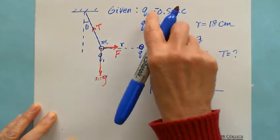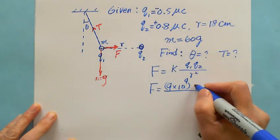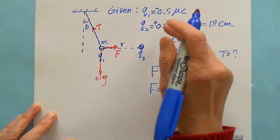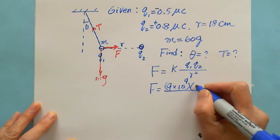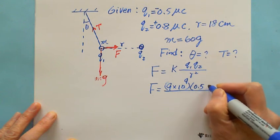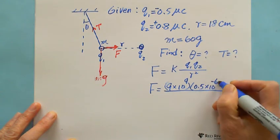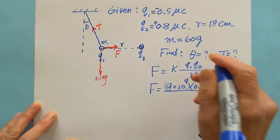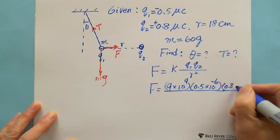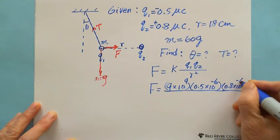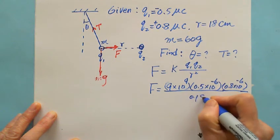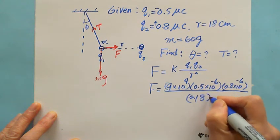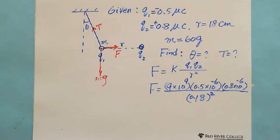So we can calculate F equals, K is almost 9 times 10 to the 9. Multiply by Q1, which is 0.5 microcoulomb, we can convert into 0.5 times 10 to the negative 6 coulomb, and multiply 0.8 times 10 to the negative 6 coulomb, divided by R squared, which is 18 centimeters converted to 0.18 meters squared.